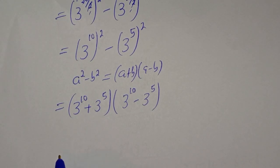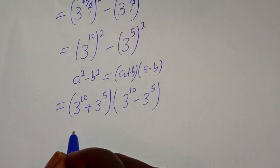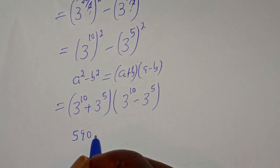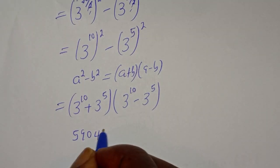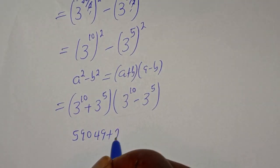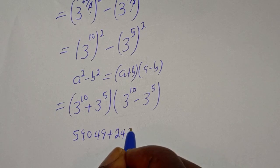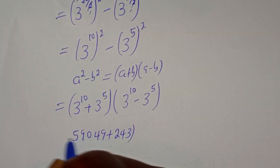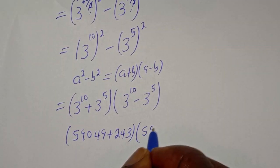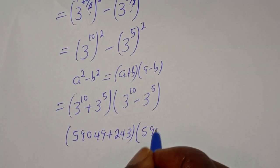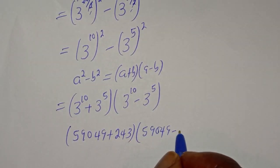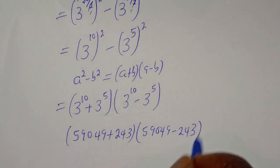t raised to power 10 is 59,049, plus t raised to power 5 is 243, bracket: 59,049 minus 243.